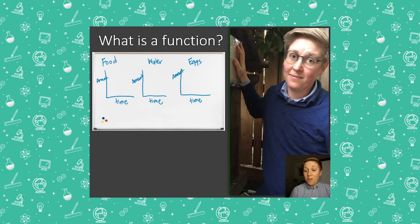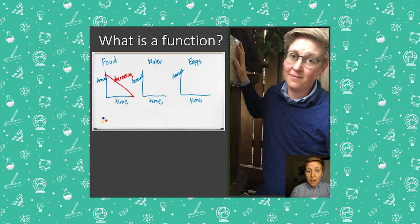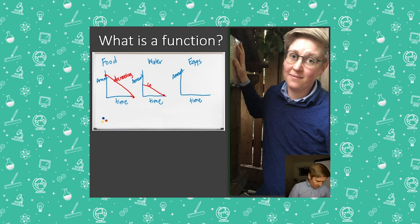As I showed in the video, I have three different functions from my chicken coop. For food: I always start with a certain amount, and over time as they eat, it becomes a decreasing function — they eat at a pretty constant rate from zero time until some amount of time. For water: very similar — I start with some amount, and they drink at a constant rate until they run out. Both of these are decreasing functions of time.